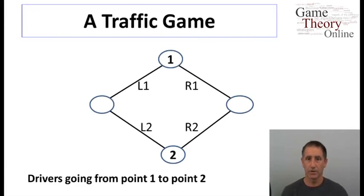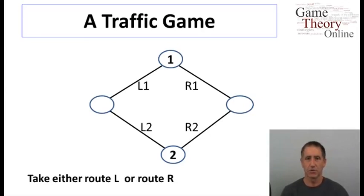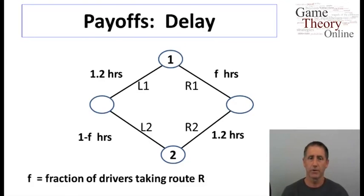Imagine the following network of four locations. The many drivers all start on location one and want to go to location two, and they can go through either the left or the right. Their choice of strategies are very simple and their preferences are also fairly straightforward. They're all defined by the delay they incur, but the delay is constructed in the following way.